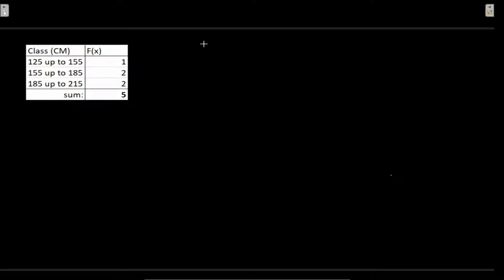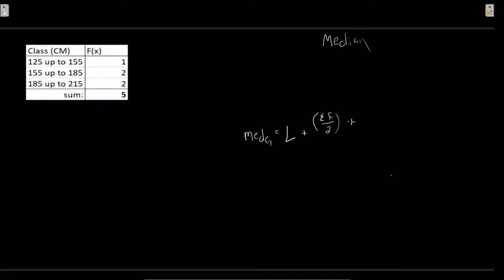Now let's work out our grouped median - this is probably the most involved of all the grouped statistics we calculate. The formula is: median equals L plus [(Σf/2 minus FC) divided by FM] times i. This looks like a lot, so let's break it down.